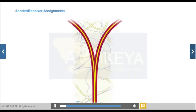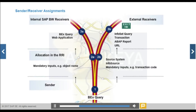To use the RRI to jump to targets that you have defined in your query, you must define the targets with the sender/receiver assignment. The sender is the BEX query and the receiver is the target destination. To define the sender/receiver assignment, you use Transaction RSBBS in SAP BW.